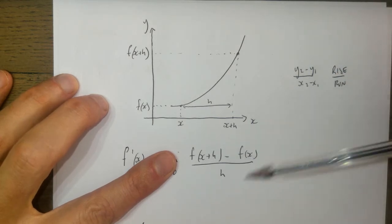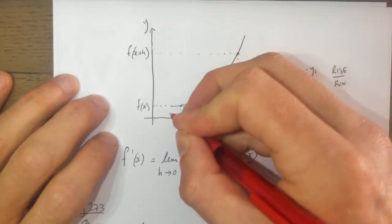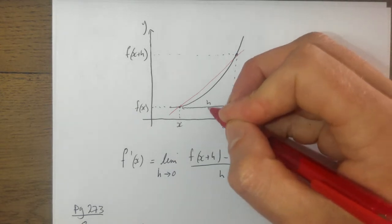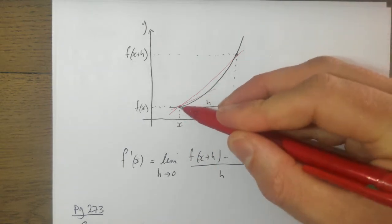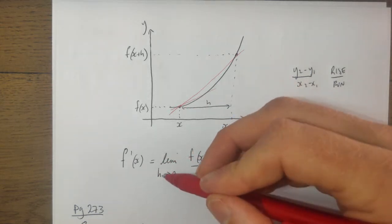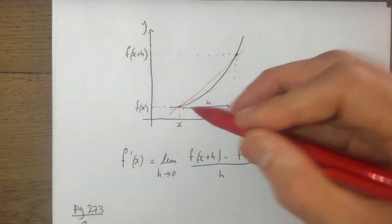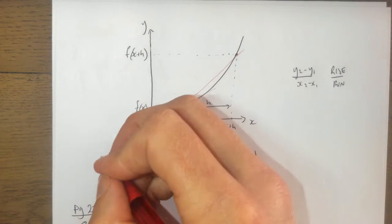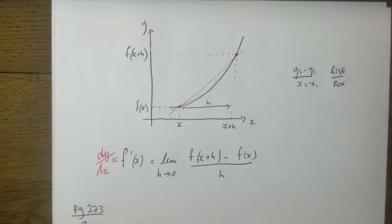The trouble is when you've got a curve - if I want to find the slope here, the smaller h is, the more accurate the slope will be to that point. As h approaches zero, the slope limits towards what we want it to be. This notation means differentiation - we also write it as dy/dx, which is the same thing. That's the theory behind what we're going to do.